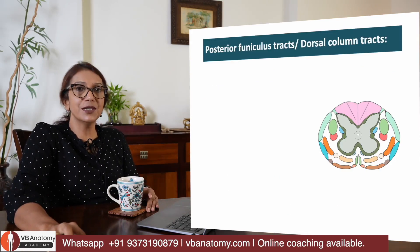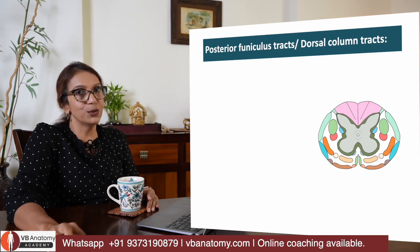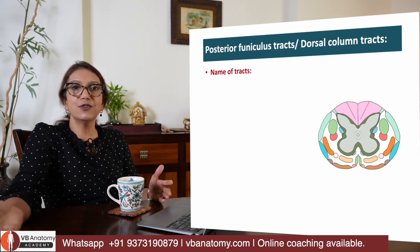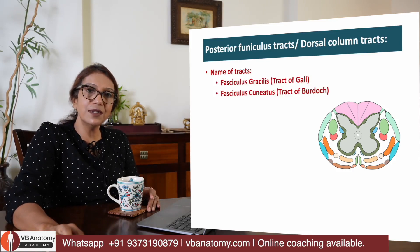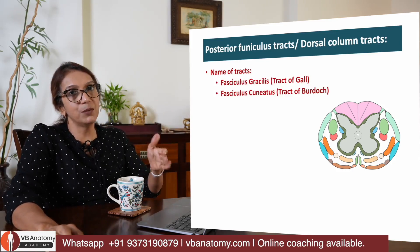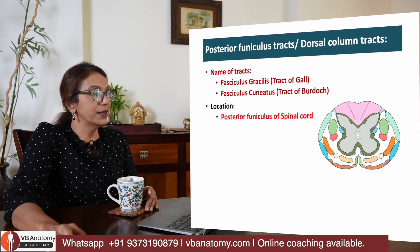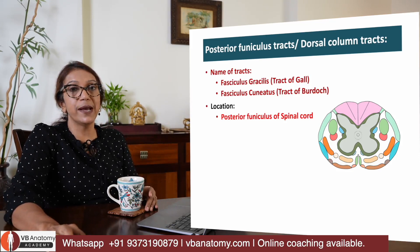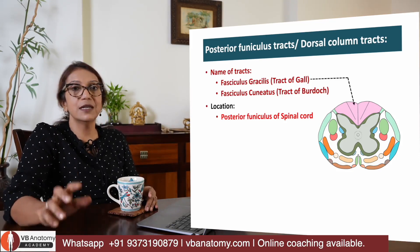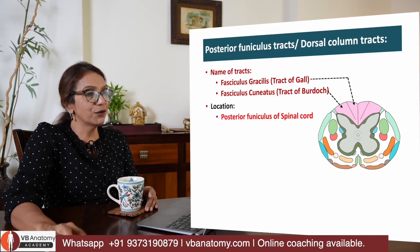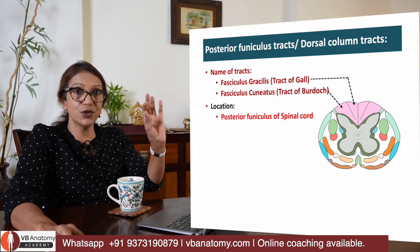So posterior funiculus tracts — fasciculus gracilis and fasciculus cuneatus. They are also called tracts of Gall and Burdoch. Where are they located? They are located in the posterior funiculus of the spinal cord, such that Gall is situated medially and the tract of Burdoch is a little lateral to it.